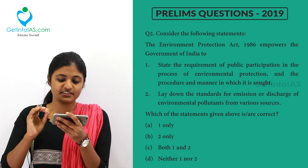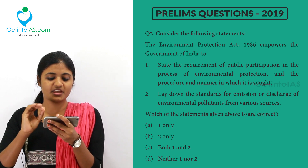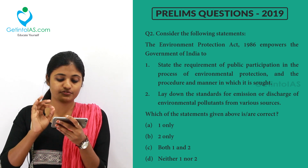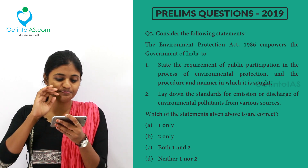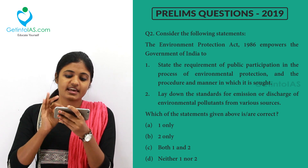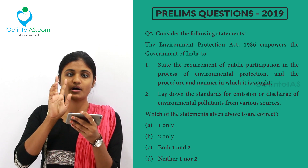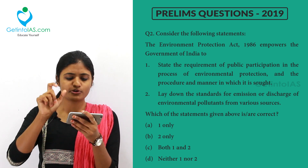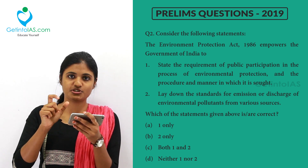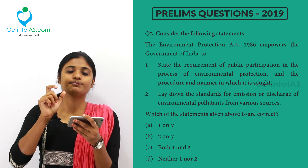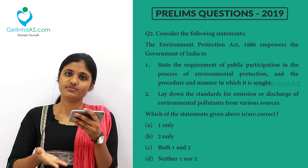The second statement: the Act empowers the government to lay down the standards for emission or discharge of environmental pollutants from various sources. They are asking which of the following statements is correct. Regarding the first option about public participation — does the Environmental Protection Act of 1986 include the word 'public participation'? Definitely no. Public participation has come in the environmental impact assessment, which we have already dealt with in our videos.